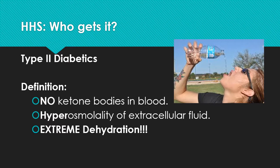The extracellular fluid — the vascular space — is extremely hyperosmolar with HHS, because the blood sugar is so very high. Osmolarity, or colloidal osmotic pressure, is created by the substances within the vascular space: proteins like albumin, glucose, and sodium. Those are the three big contributors to osmotic pressure. Because the sugar is so high, the serum is extremely hyperosmolar and these patients are prone to extreme dehydration.